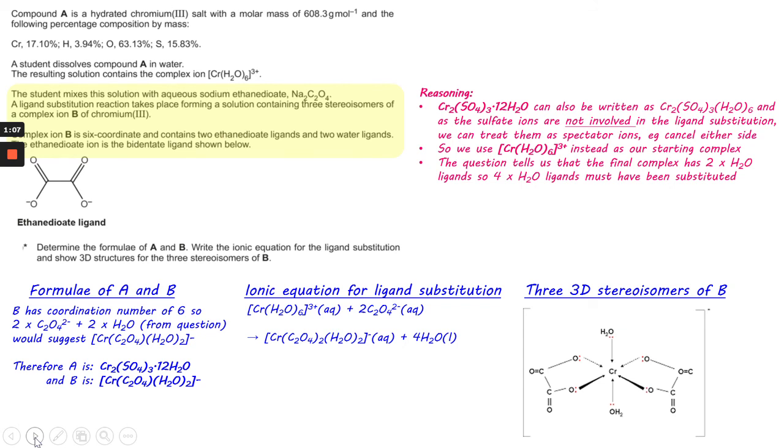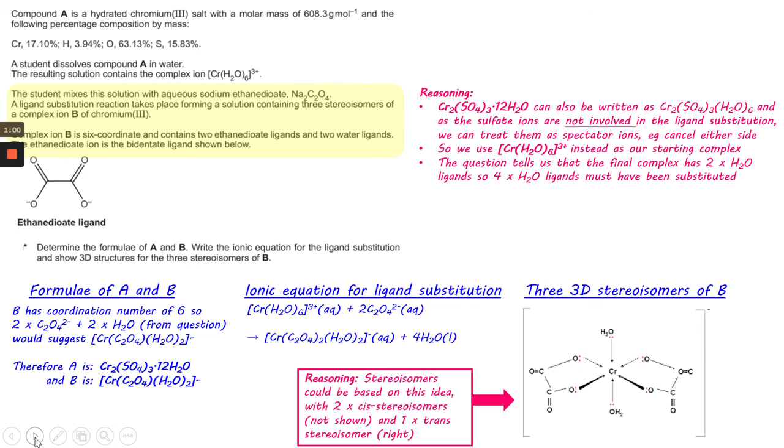The next thing to do is the 3D stereoisomers. I've located a picture online and borrowed it for this video. The reasoning here is that there are stereoisomers based on this structure: two cis stereoisomers that I haven't shown here yet. The cis stereoisomers would have the two ethanedioate ligands at 90 degrees to one another, arranged as two optical isomers or mirror images, and the third stereoisomer would be the trans isomer shown in the picture here.